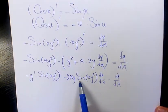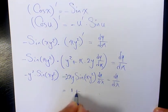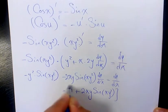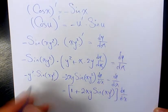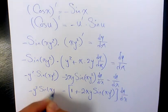Now I move this part to the right hand side, so when you factor it, it's going to be 1 plus 2xy sine x y squared times dy over dx. And on this side, you have negative y squared sine x y squared.